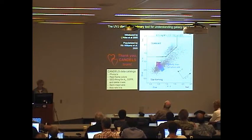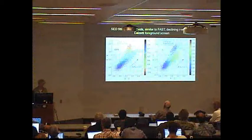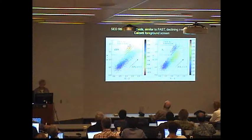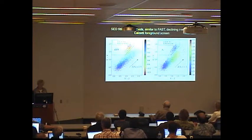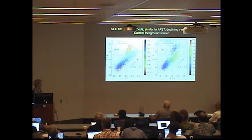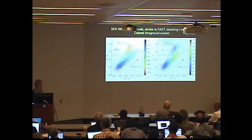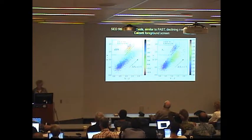The CANDELS team has done SED fitting using 10 different methods, similar to FAST, but all using declining tau models in the Calzetti foreground screen. That's crucial. And these are global properties, UV-J, from CANDELS galaxies. Here's the pattern that you get of specific star formation rate. You get stripes that go this way. And this is the pattern that you get for visual absorption. You get vertical bands that go this way. And the reasons for these things are well understood.